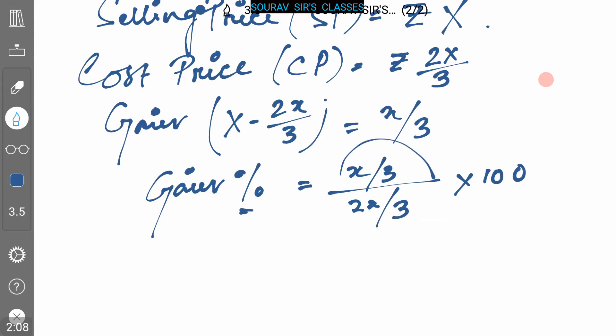This equals (x/3) × (3/2x) × 100, which is 50 percent. Here is our answer.